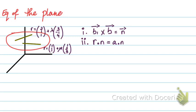So the only difference is in the previous video we found the equation of the plane when we had three points. We formed two vectors from those points, we crossed those two vectors to find the normal and then r dot n equals a dot n, a being either of the three points.